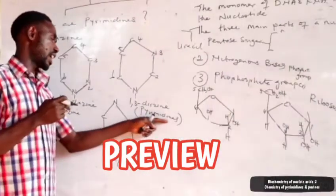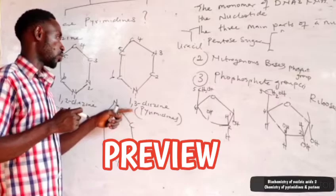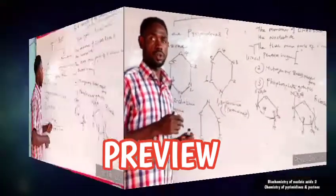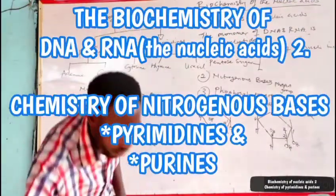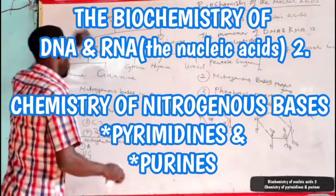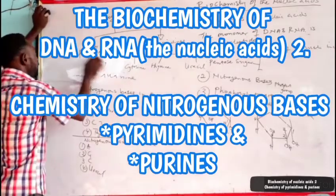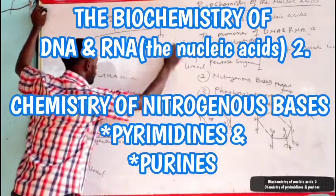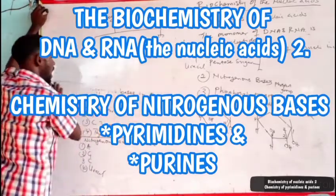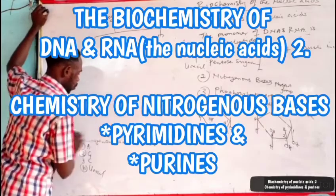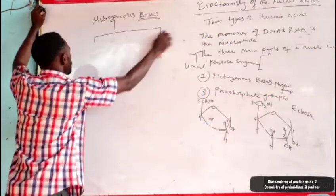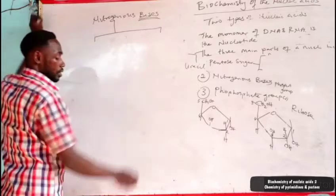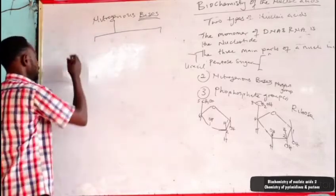That is what we call pyrimidine, an isomer of the diazine that has the nitrogen atoms in the 1,3 position. At this base level, we go into detail in the biochemistry of these bases. When we say pyrimidines, what are actually pyrimidines? We will see pyrimidine and also purines.